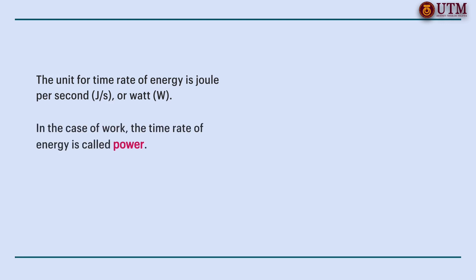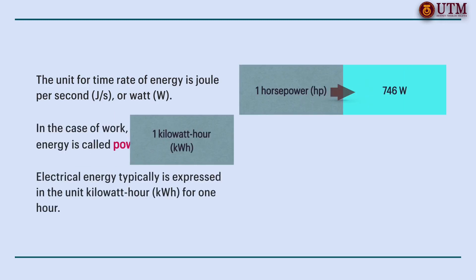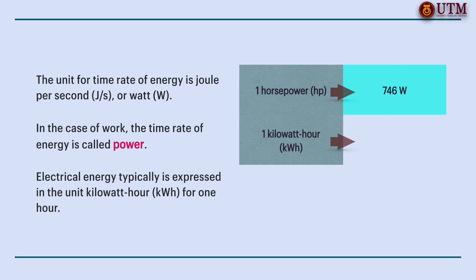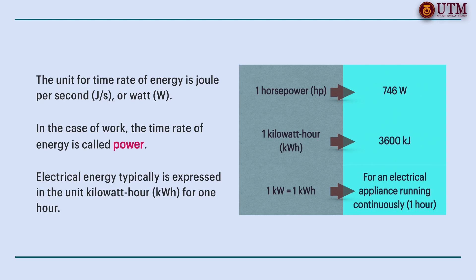The unit for time rate of energy is joule per second, which is called a watt. In the case of work, the time rate of energy is called power. A commonly used unit of power is horsepower, which is equivalent to 747 watt. Electrical energy typically is expressed in the unit kilowatt hour, which is equivalent to 3600 kilojoule. An electric appliance with a rated power of 1 kilowatt consumes 1 kilowatt hour of electricity when running continuously.